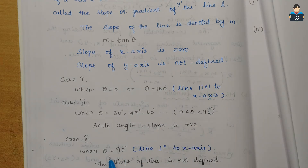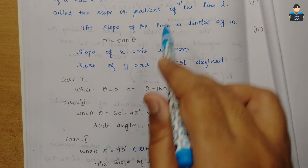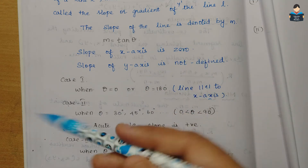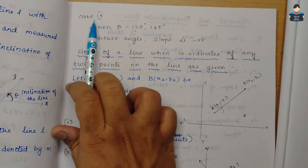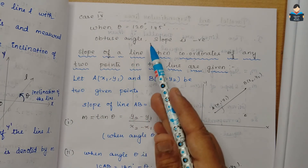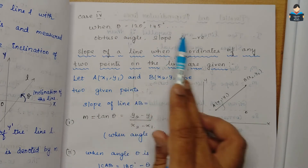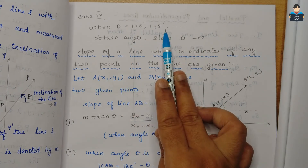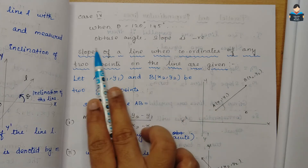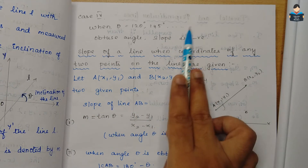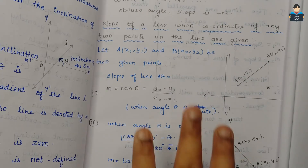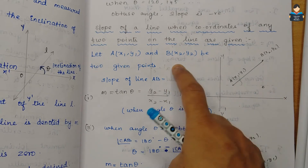When theta is 90 degrees, the line is perpendicular to the x-axis, so the slope is not defined. In the fourth case, when theta is an obtuse angle — above 90 degrees, such as 120 or 145 degrees — the slope of the line will be negative. These are the four cases for the slope of a line.